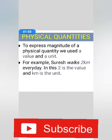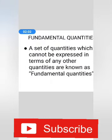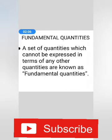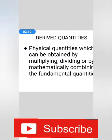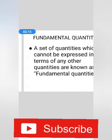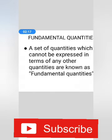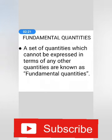Now, let us study about units. Fundamental quantities and derived quantities are the two kinds of physical quantities. Fundamental quantities, or a set of quantities which cannot be expressed in terms of any other quantities, are known as fundamental quantities.